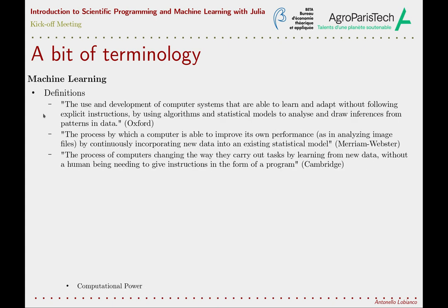The term machine learning is still somehow vague, but much less than artificial intelligence. As we did for artificial intelligence, let's see its definition from the dictionaries. The first, from Oxford, is: the use and development of computer systems that are able to learn and adapt without following explicit instructions, by using algorithms and statistical models to analyze and draw inferences from patterns in data. We can see already some important concepts — the first is that machine learning algorithms should be generic and should learn problem resolutions from the data.